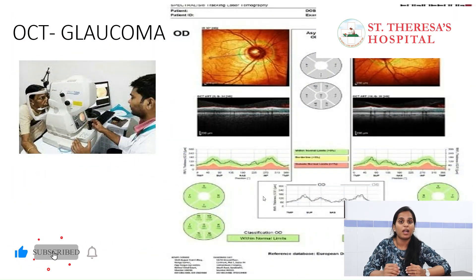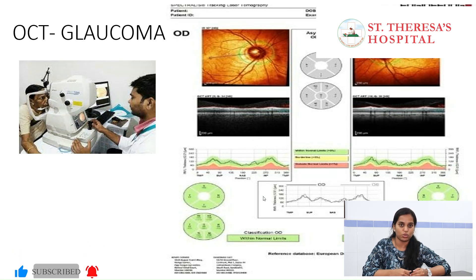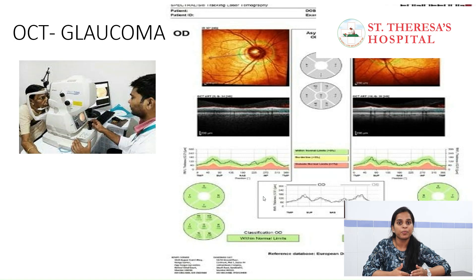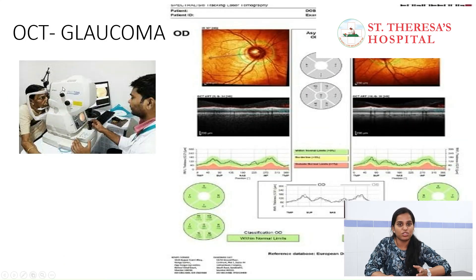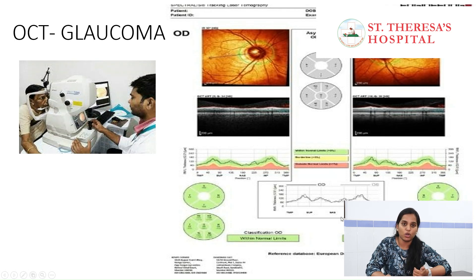The next test is very objective and very reliable — it tests the nerves. This is like a CT scan of the optic nerve. We use OCT (Optical Coherence Tomography) — a patient scanning machine. We scan for 2 to 3 minutes and get a detailed report. Parameters shown in green are normal.